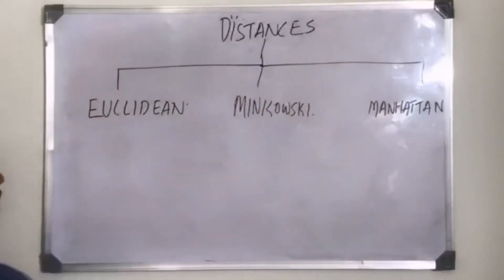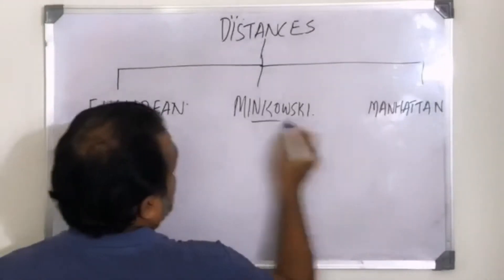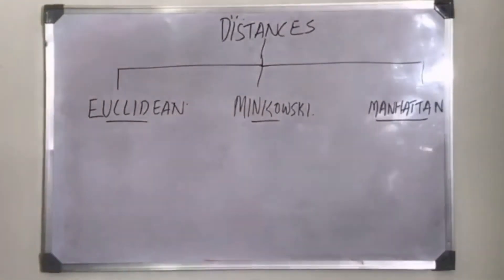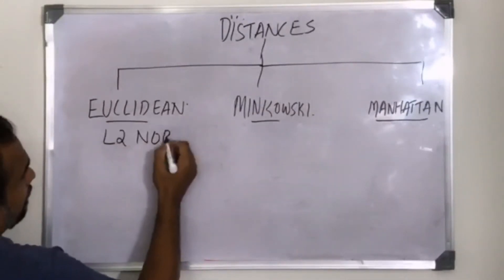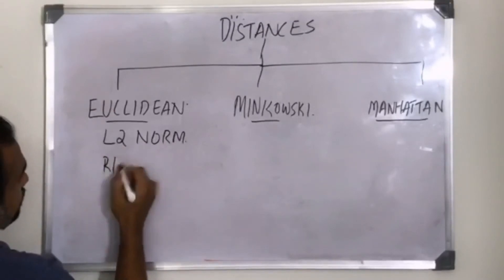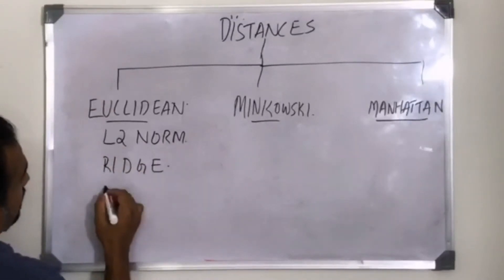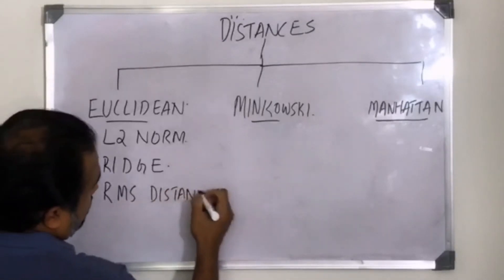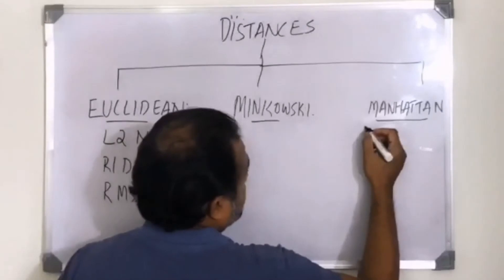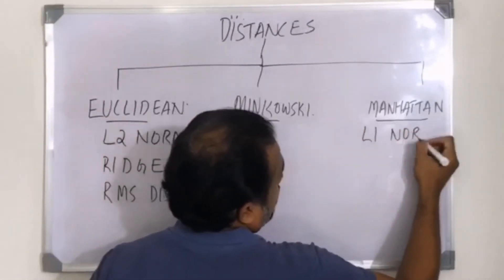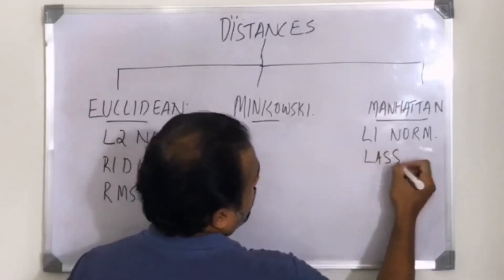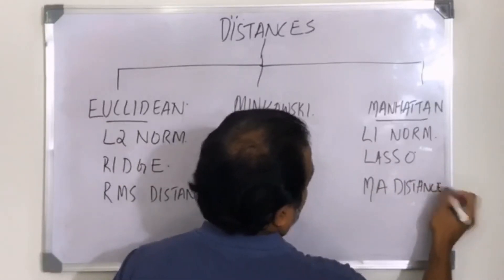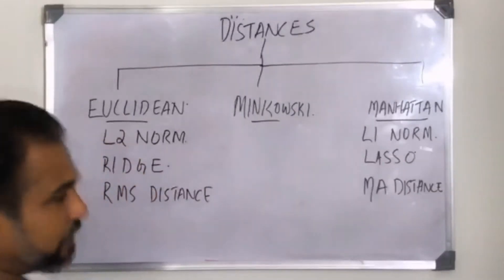Euclidean distance is also called L2 norm, Ridge, and some people also call it root mean squared distance. Manhattan distance, in other terms, is called L1 norm, Lasso, or mean absolute distance. We'll get to know why these are called RMS and MA in a bit.